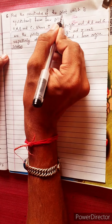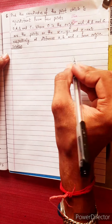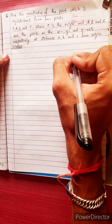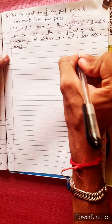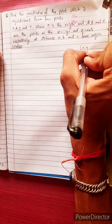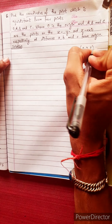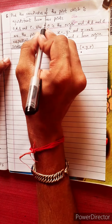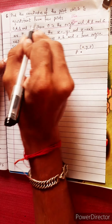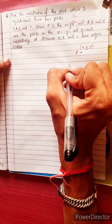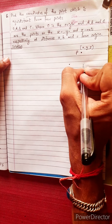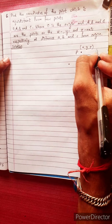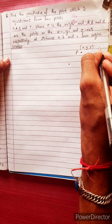Find the coordinates of the point. Suppose the unknown point is P. Suppose the point is X, Y, Z. The point is equidistant from 4 points. Suppose the points are O, A, B, and C.